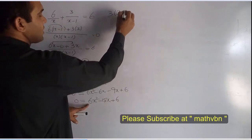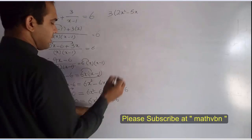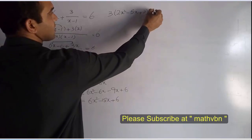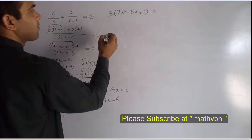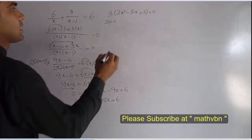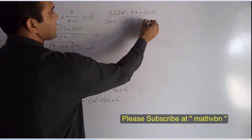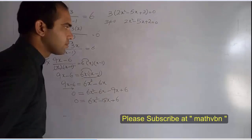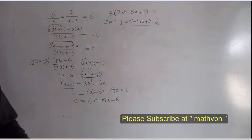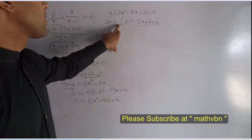Dividing through by 3: 3 into 6 is 2, 3 into 15 is 5, and 3 into 6 is 2. Here, the important thing is 3 is not equal to 0, so the equation becomes 2x squared minus 5x plus 2 is equal to 0. Now this is the quadratic equation, and we will proceed to solve it by factorization.